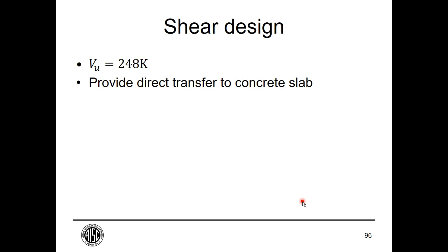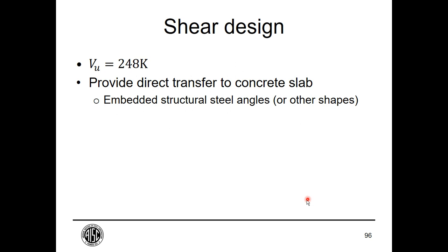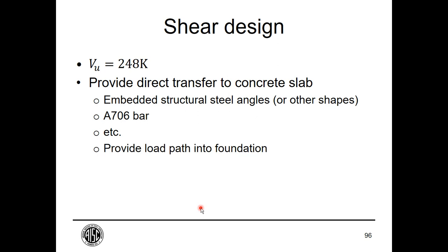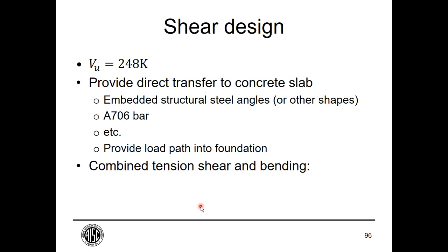For the 248 kip shear, we provide a direct transfer into the concrete slab and from the slab down into the foundation. You can use embedded structural steel angles or other shapes, welded A706 bar, or many other methods. I'm showing essentially a double angle in this example. If we had designed the anchor rods for combined shear and bending instead of the inch-and-three-quarter rods, we would be using three-inch anchor rods. So I am a big fan of providing a separate load path for shear and not putting it into the anchor rods.